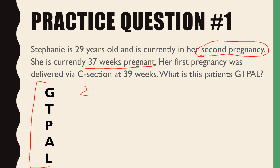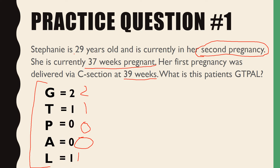Her first pregnancy was delivered via C-section at 39 weeks. What is this patient's GTPAL? For Term: the current pregnancy isn't born yet so we can't count it yet. The previous one was 39 weeks — that's term — so T = 1. No preterm mentioned, P = 0. No abortions or miscarriages mentioned, A = 0. The first baby came out alive with nothing suggesting otherwise, so L = 1. Final answer: G2 T1 P0 A0 L1. Correct!